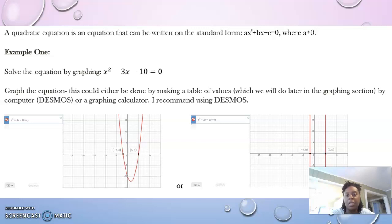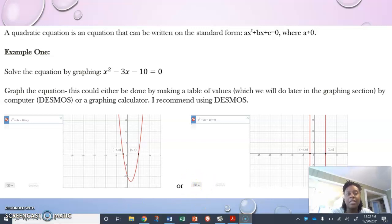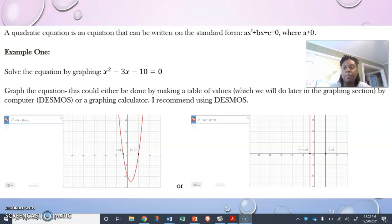For the first example on your notes page, I did that example for you. We're graphing the equation x² - 3x - 10 = 0. I show you two different ways of putting it into Desmos. In the next slide I will go over how I put that into Desmos and what that looked like.